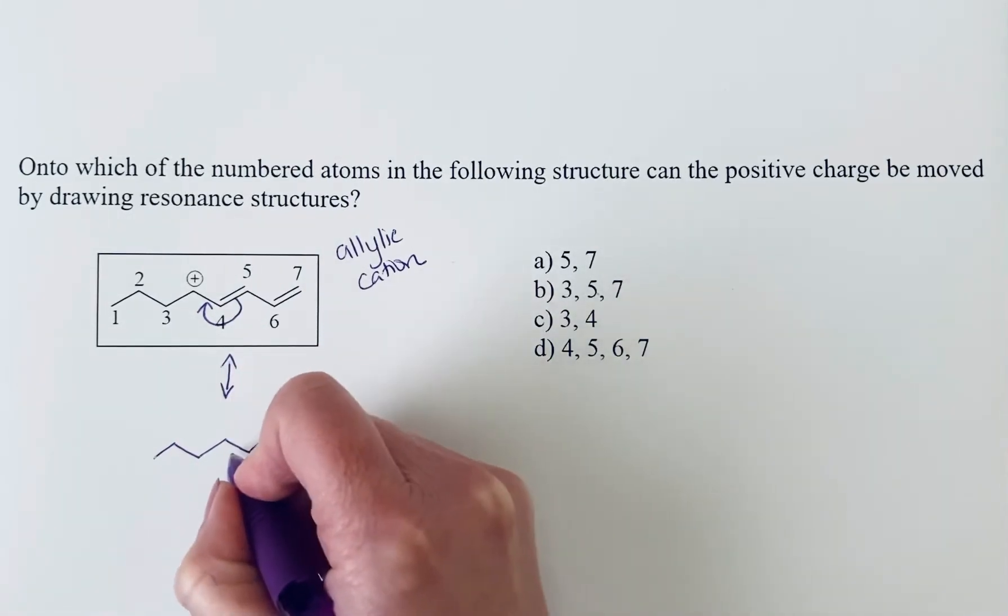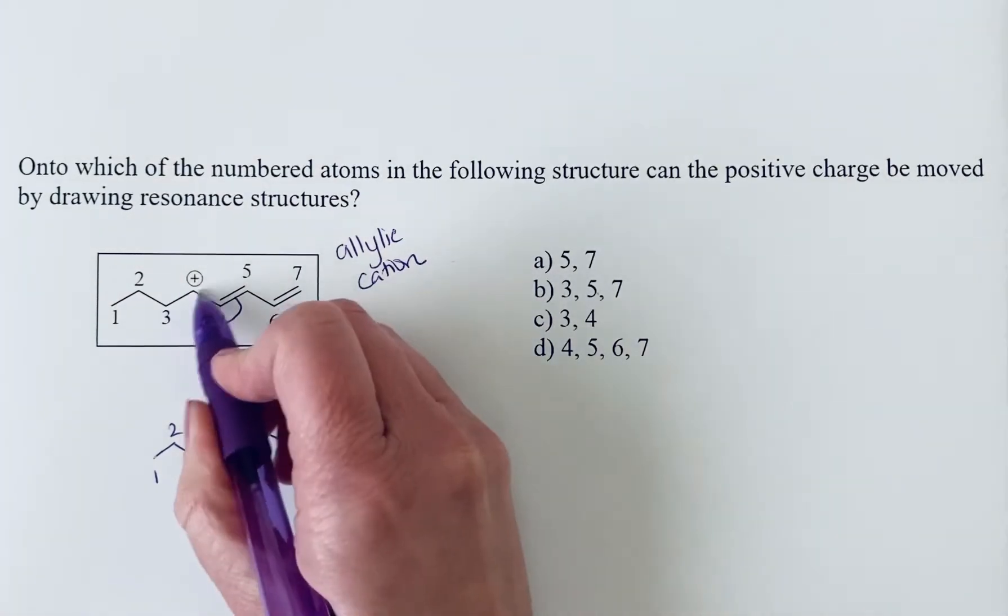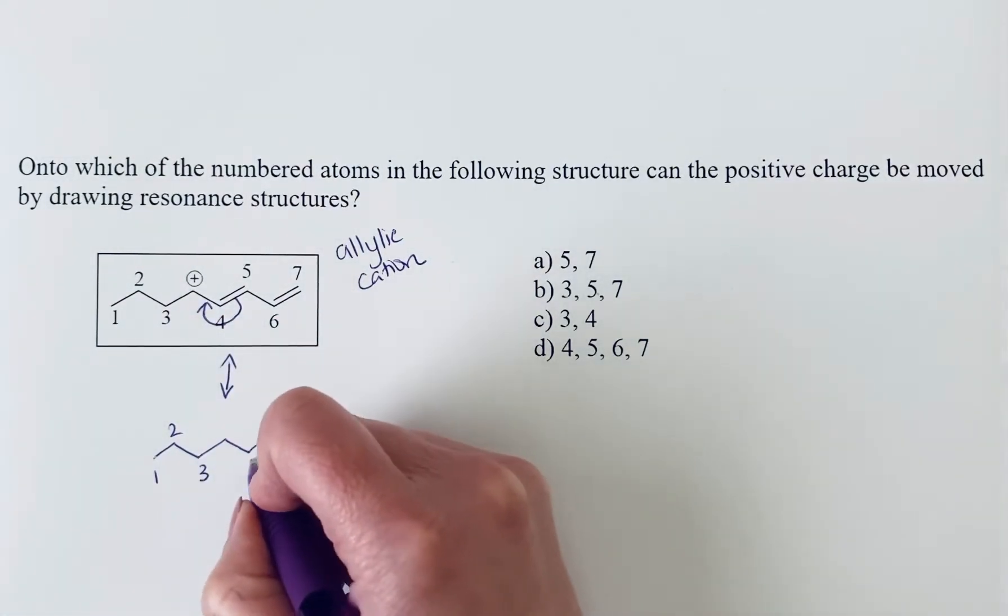So we have put, let's number these atoms. The number skipped over where that positive charge was because we're looking for where it moves, not where it started from.